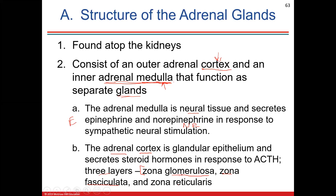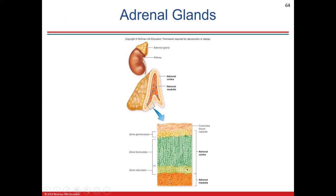The zona reticularis is the innermost. We heard about the adrenocorticotropic hormone from the anterior pituitary — ACTH — which targets all three layers in one way or another. So we're going to learn what the zona glomerulosa secretes, what the fasciculata and reticularis secrete, and their hormone names.